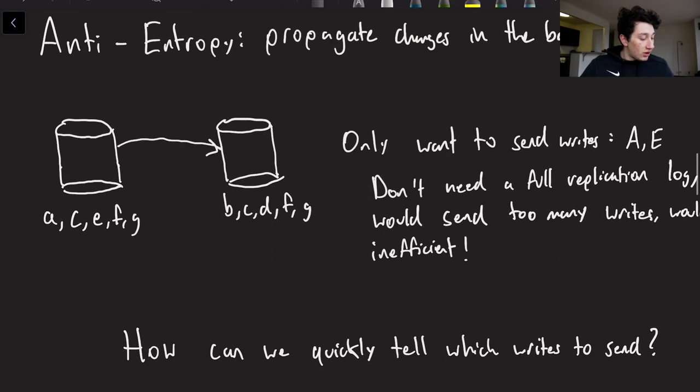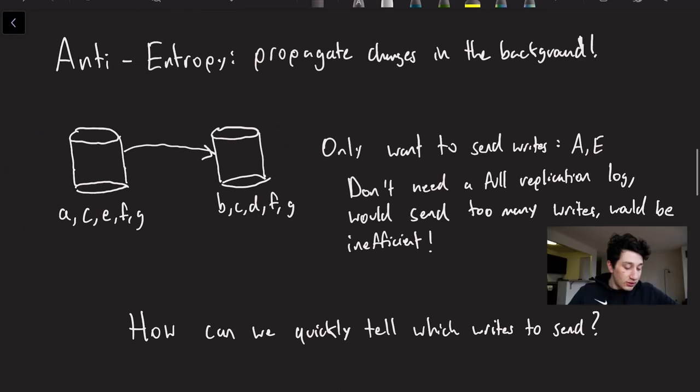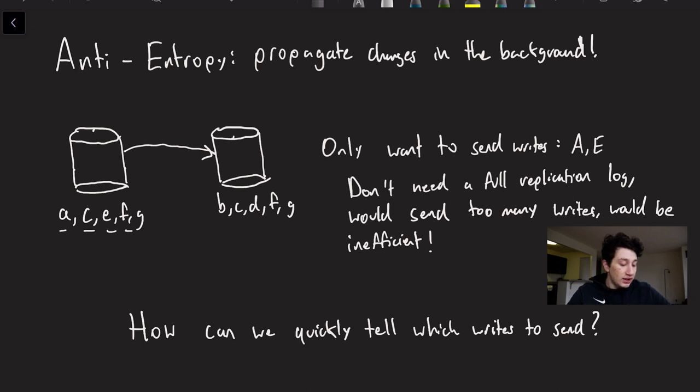So let's take a look at the other way of ensuring that our values are up to date. This one is called anti-entropy. So the gist here is we've got these two databases, or just in general databases because there isn't really a leader in this setup. And the list of letters below are the writes that they've processed. So this guy on the left has processed A, C, E, F, and G, and on the right he's processed B, C, D, F, and G.